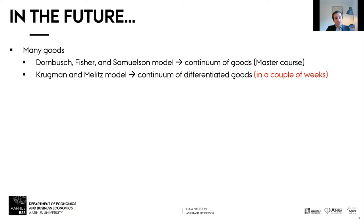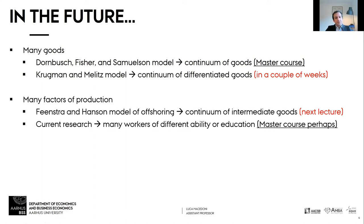In this course we're going to look at a model with many goods — the Krugman and Melitz models — in just a few video recordings, and then we'll have a continuum of differentiated goods. In terms of factors of production, we'll see the Feenstra-Hanson model of offshoring, which features a continuum of intermediate goods as inputs combining into a final good. There's also a lot of research on heterogeneous workers with different abilities and how trade affects them, which may be covered in a master's course.